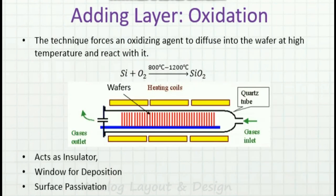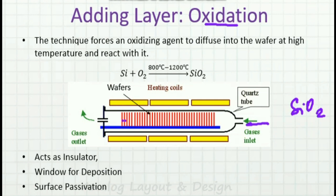One more way of adding a layer is the oxidation process. For example, to develop a SiO2 layer or insulator layer on top of the silicon wafer, we use oxidation. The wafers are placed vertically in a quartz tube, which can withstand very high temperatures. Oxygen gas is passed through at higher temperature, which oxidizes the silicon wafer into silicon dioxide.